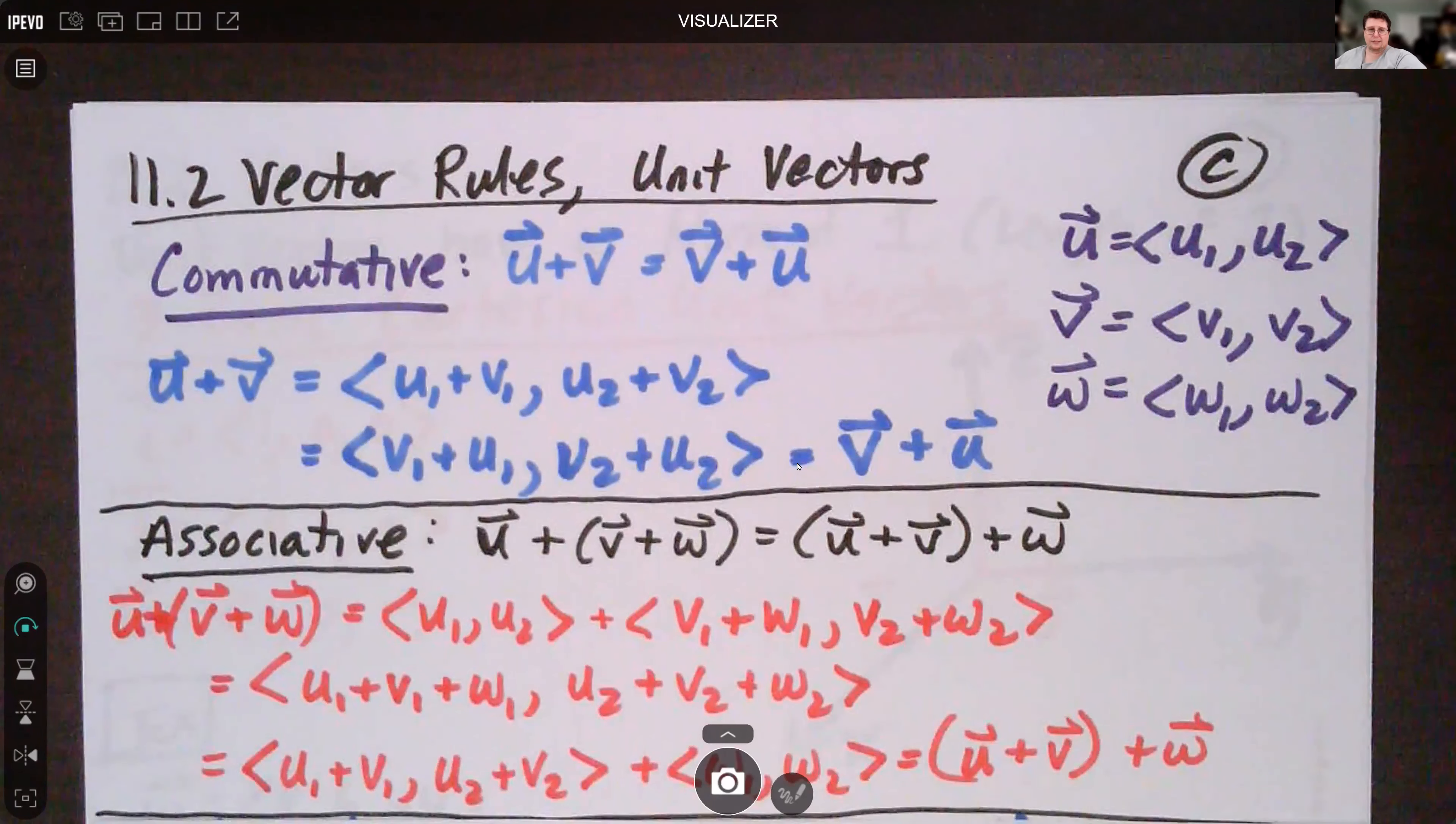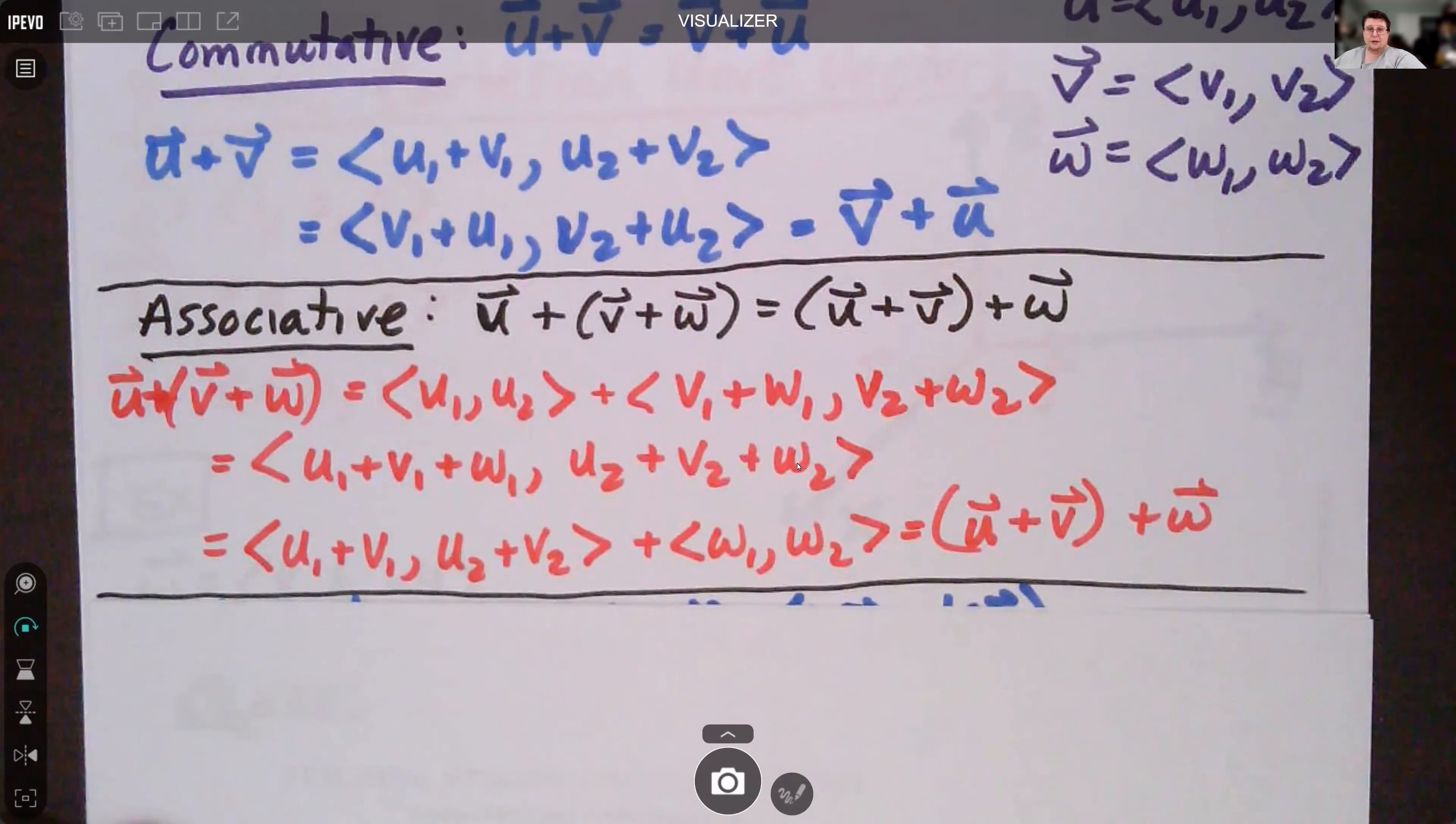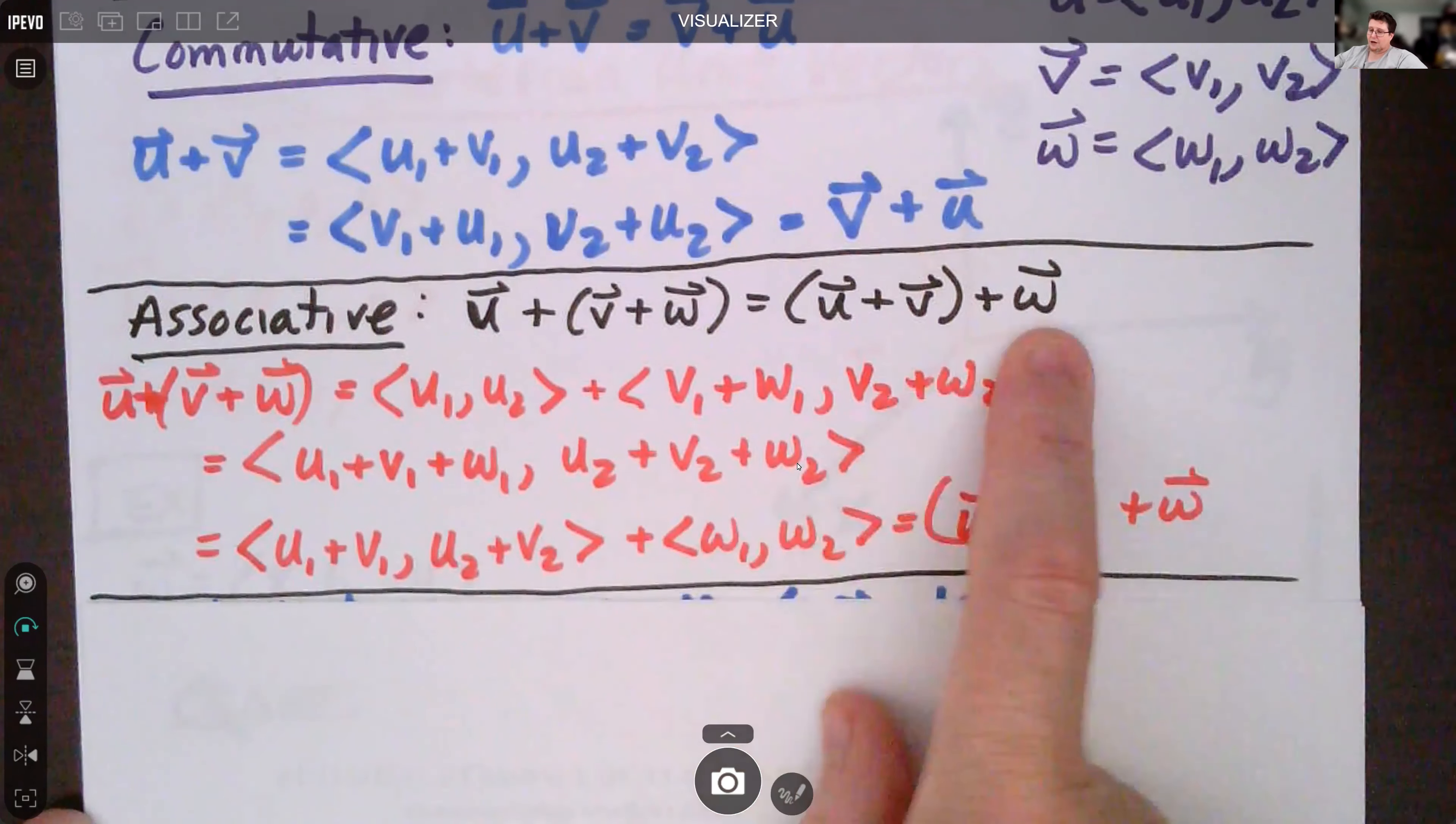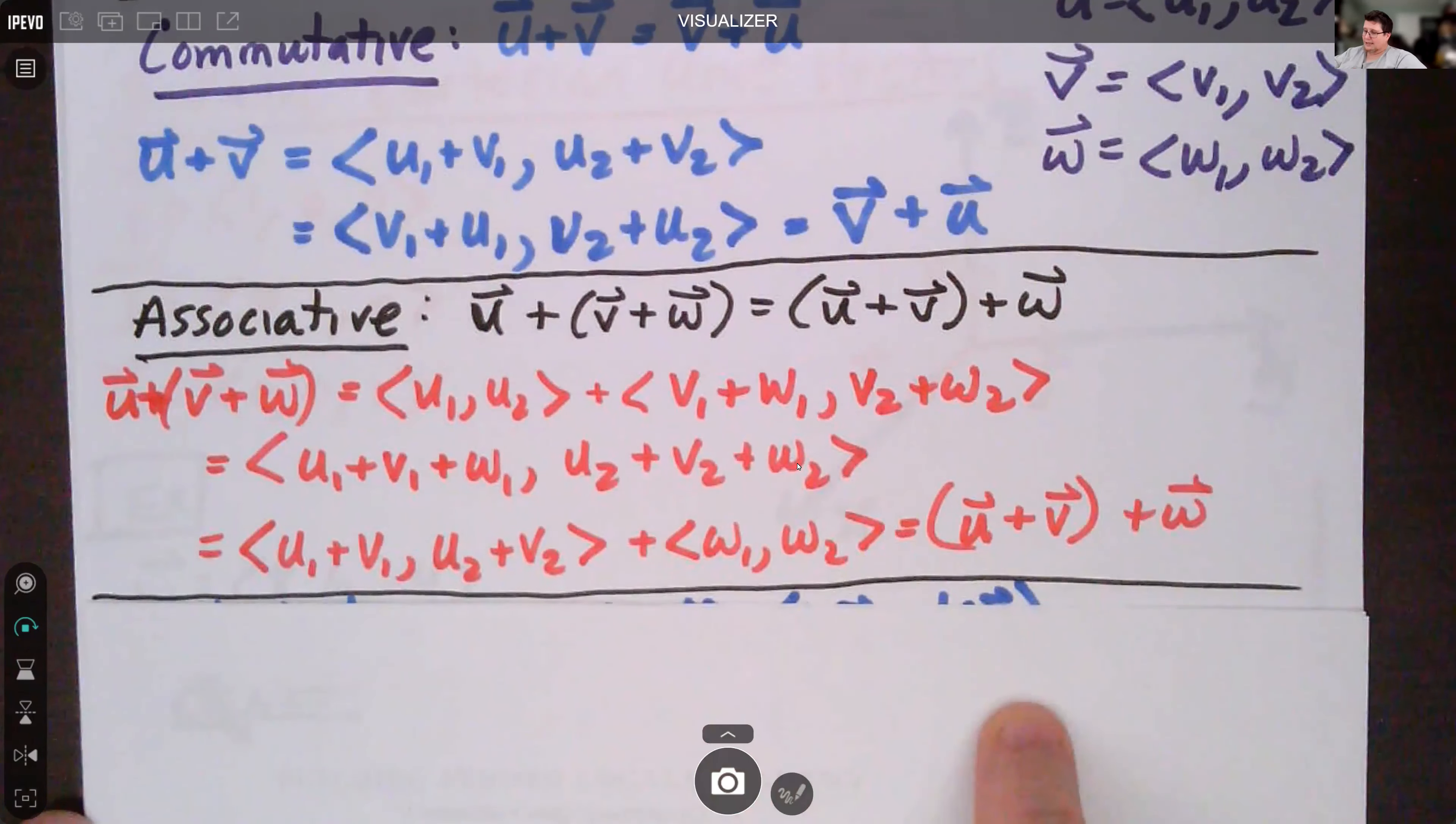The associative property also holds. That's where it doesn't matter what order we add the vectors in, we get the same result. So if we do u plus v plus w, we can add v and w together first, then add in u, and we get this result. This is all three added together, just showing you we end up with the other option. I re-separate this out as u1 plus v1, u2 plus v2, plus the vector w1, w2, which is this right here.